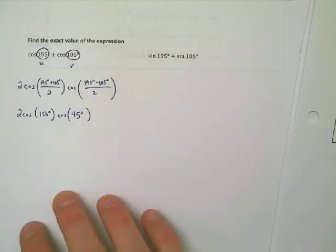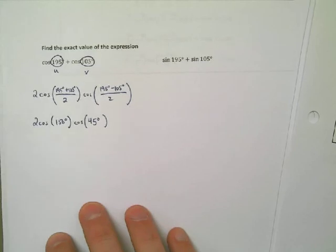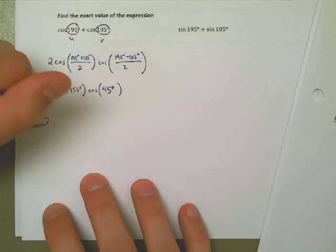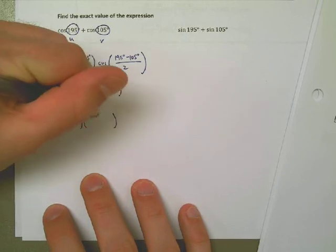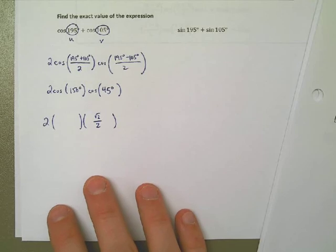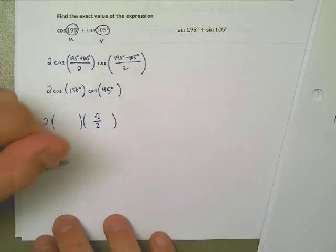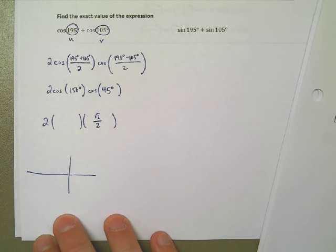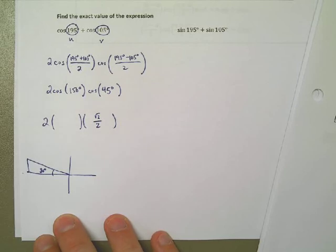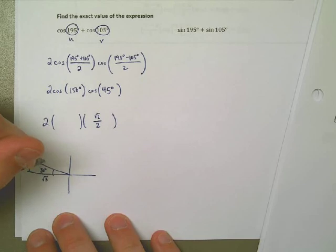The cosine of 45 I already know is going to be the square root of 2 over 2. The cosine of 150, well for me, even doing this all this time, it still takes me a little bit of work. I have to draw this triangle. This is 180, so that means I got a 30 degree triangle on the inside. 1, square root of 3, 2. This is negative because we're going to the left. Cosine is negative in the second quadrant. The cosine of this angle is negative square root of 3 over 2.